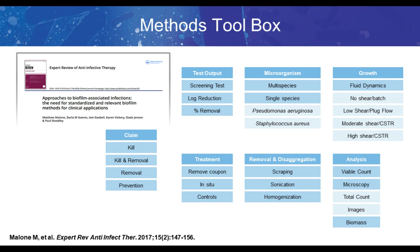In terms of treatment, do we need to remove a coupon from the growth system and then treat it, or can we treat it in situ? What are our controls? If we're growing biofilms and exposing them to a therapeutic, and we want to validate that we've killed the biofilm on the surface, we need to remove biofilm or look at that surface for evidence of removal. For example, if I do a cell count and get zero, I might say I've killed everything on the surface. But then I look at the surface and realize the methodology to get the biofilm off for enumeration didn't actually remove the biofilm — that's an artifact. We really need to validate that surface removal methods such as scraping, sonication, or homogenization are effective.